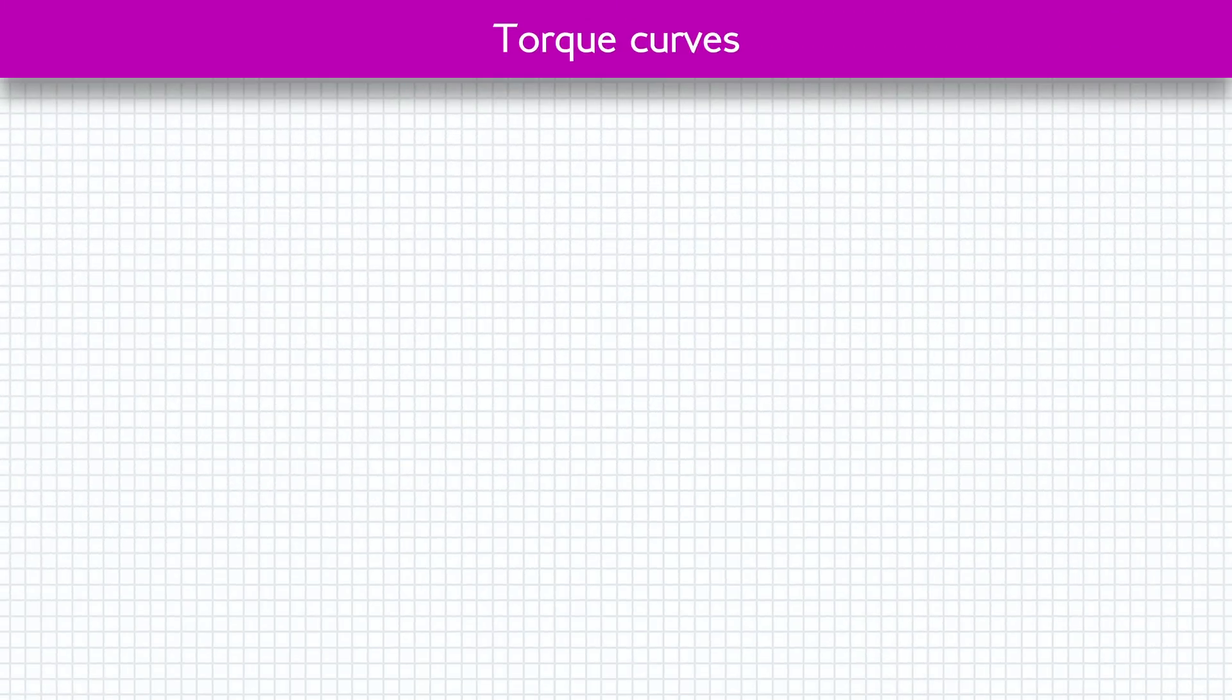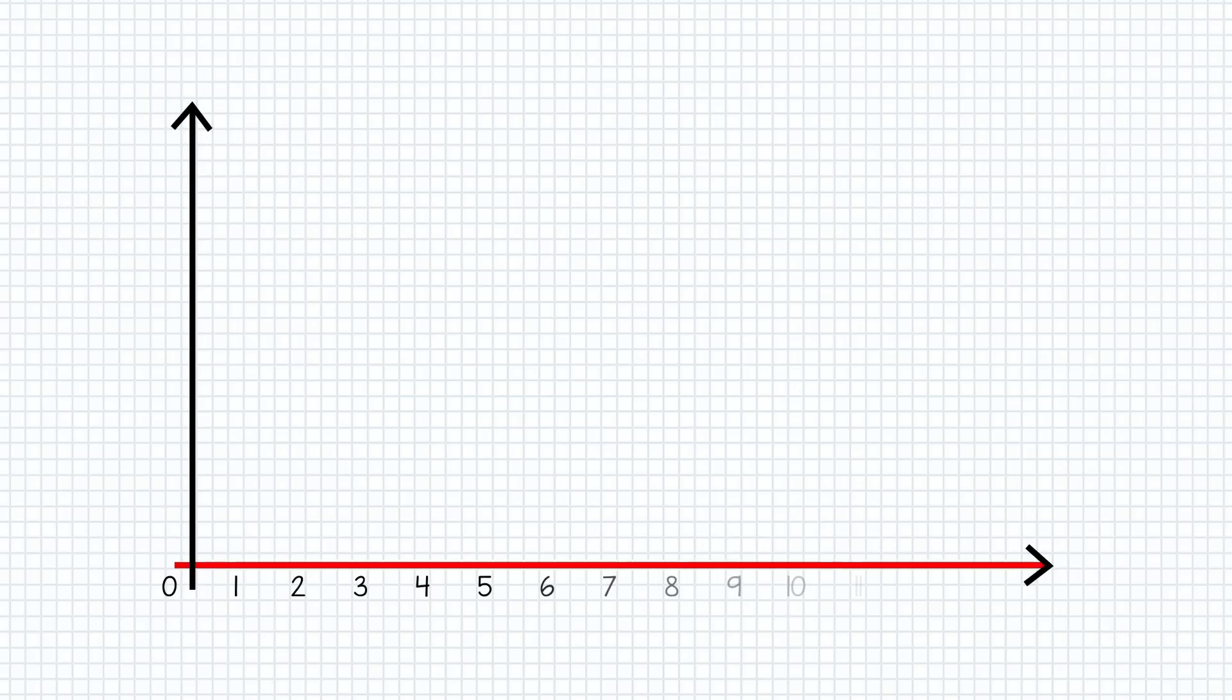Now we have to look at torque curves and this means graphs and I know that's not intuitive to everyone but I'm going to make it super simple. So let's draw some axes. Along the horizontal axes here, we're going to represent RPM which is revs per minute. As we move along the axis, the engine does this.